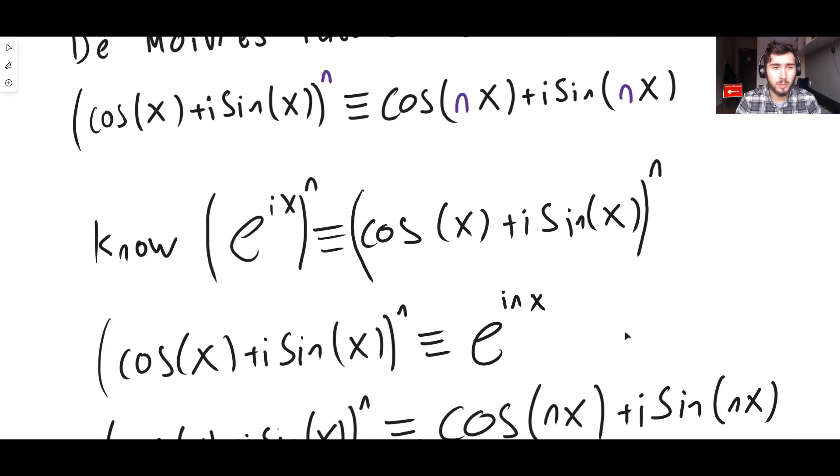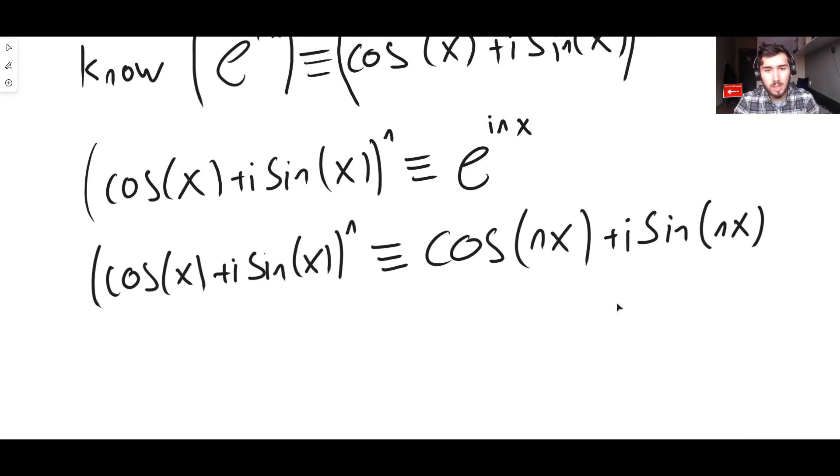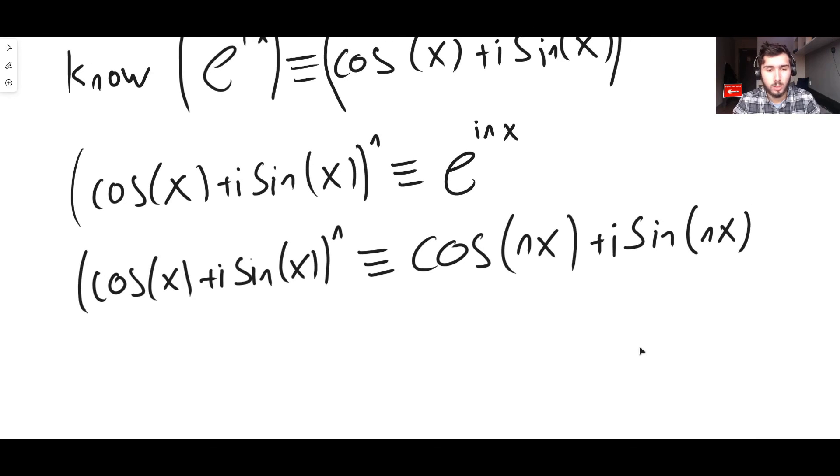So all you have to do is you have to take, you have to use Euler's formula, and you have to bring the whole cos and i sine into the exponential world, E to the i x. Raise both sides to the power of n, expand things out, do some simple algebra, really, and there you are. It's actually not a difficult formula to derive.